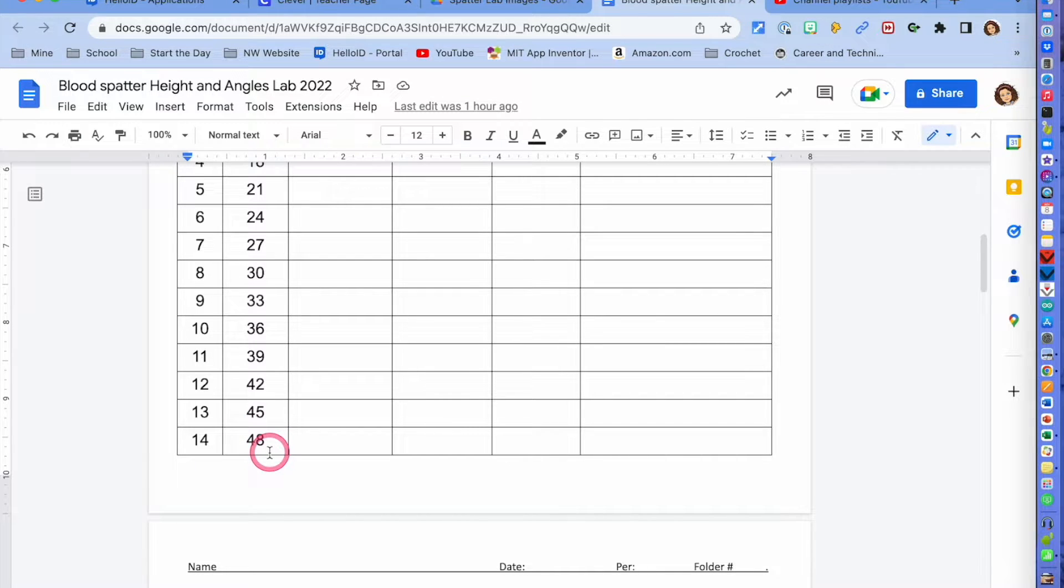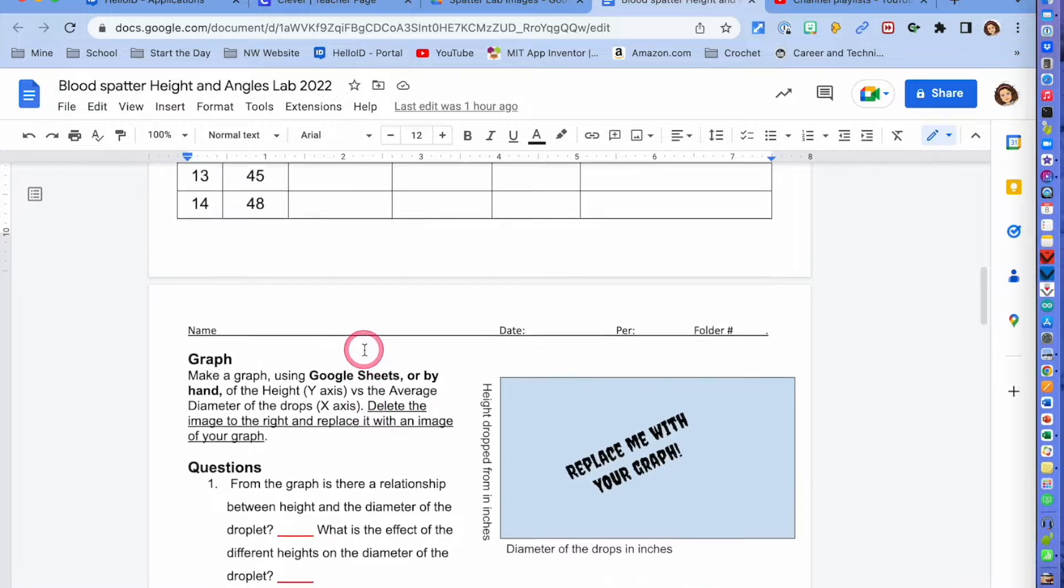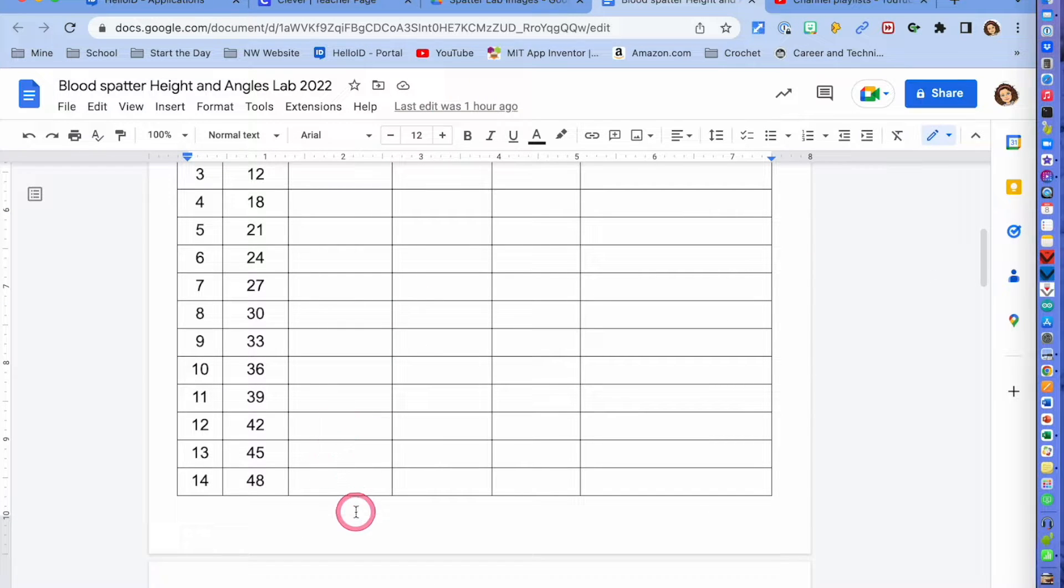Then once you get all of your drops on there you're going to measure them. Once they're all dried you're going to figure out the average and you're going to make a graph.